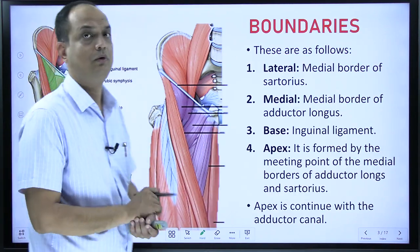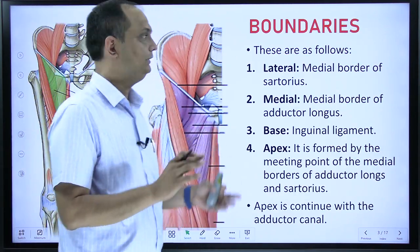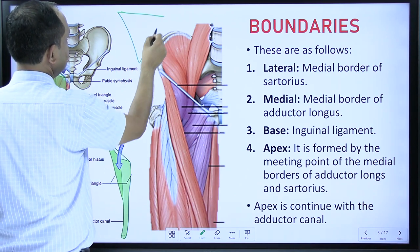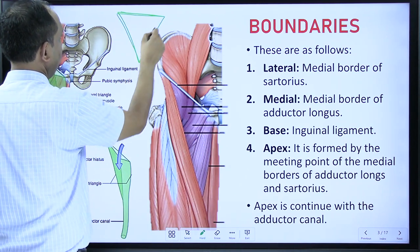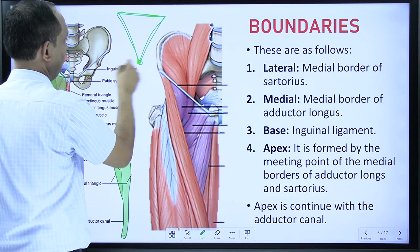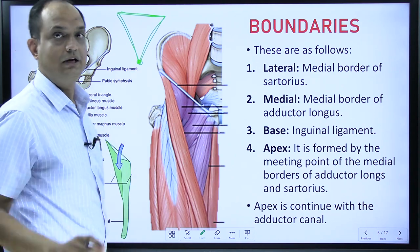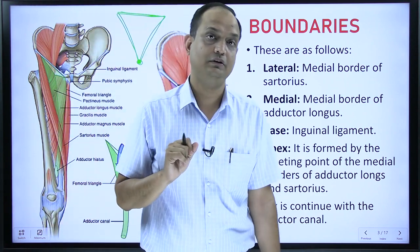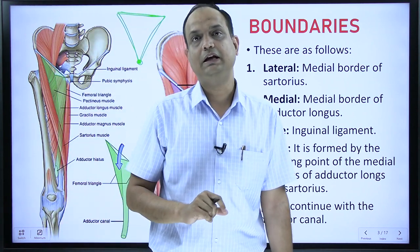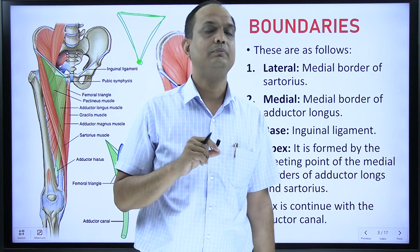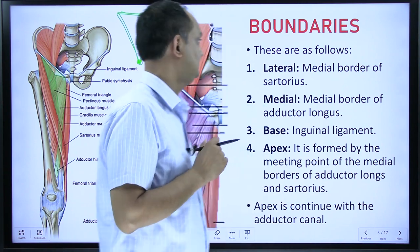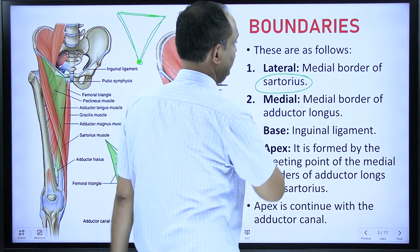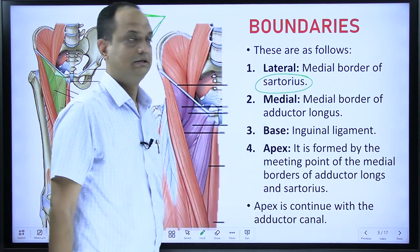Now what are the boundaries of the triangle? Whenever you have a triangle, you know it has a base, apex, and borders. The apex is directed downward. To understand the boundaries, you first need to know about the muscles of the front of thigh. In the front of thigh, you have a long ribbon-like muscle known as sartorius. One of the boundaries is formed by the sartorius.